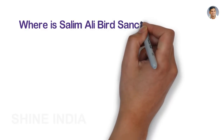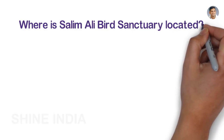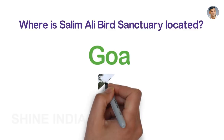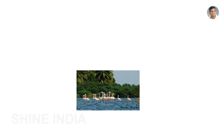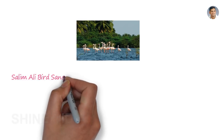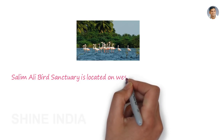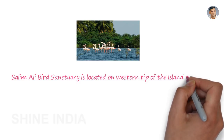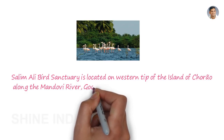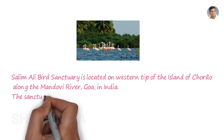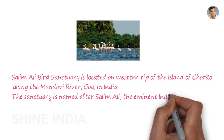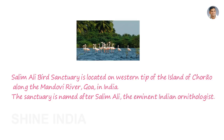Salim Ali Bird Sanctuary is located in Goa. It is located on the western tip of the island of Chharao along the Mondovi River in Goa, India. The sanctuary is named after Salim Ali, the eminent Indian ornithologist.